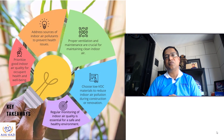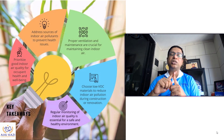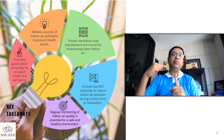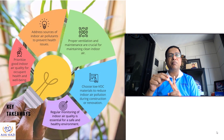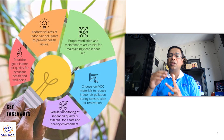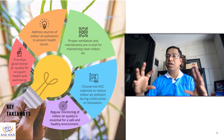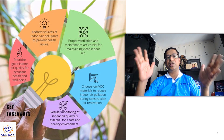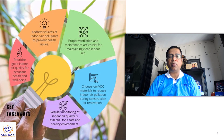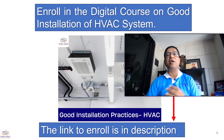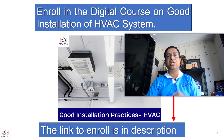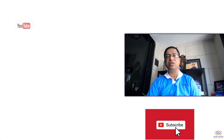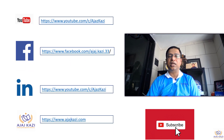Key takeaways from this session: First, understand that IAQ is a problem and prioritize achieving the right IAQ. Look at what pollutants exist and address them. Ensure proper ventilation. Cleanliness is important. Choose low-VOC materials. Regular maintenance and cleanliness of the HVAC system are essential, and education and awareness for everybody is key — because we can jointly solve this problem. Thank you for your patient listening. My digital course on Good Installation of HVAC Systems, also linked to indoor air quality, is available — the link is in the description box. Please subscribe to my channel and follow me on YouTube, Facebook, LinkedIn, and ajazkazi.com.